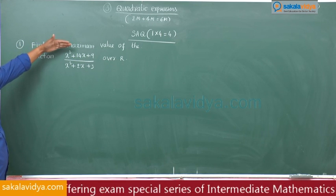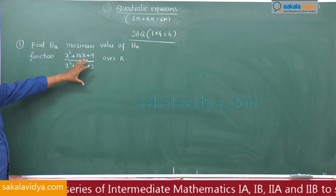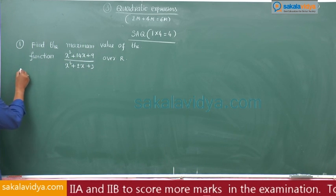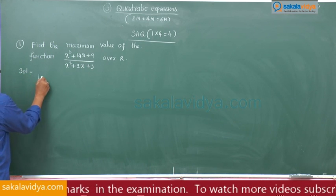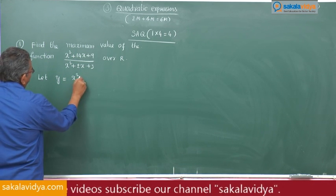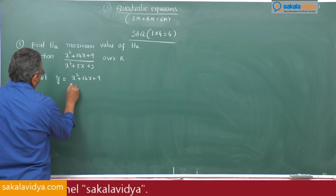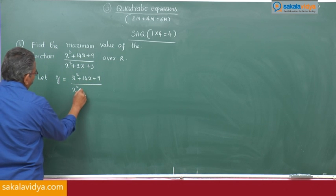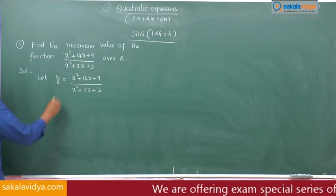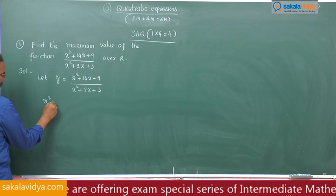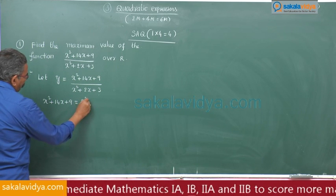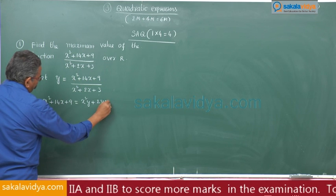We have to find the maximum value of this function over the real number system. Let y = (x² + 14x + 9) / (x² + 2x + 3). Multiplying both sides, we get x² + 14x + 9 = x²y + 2yx + 3y.